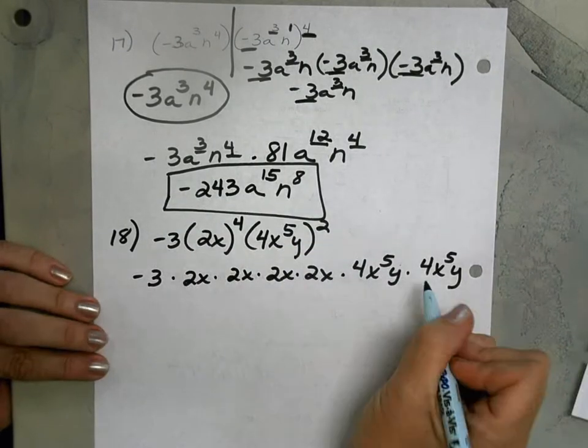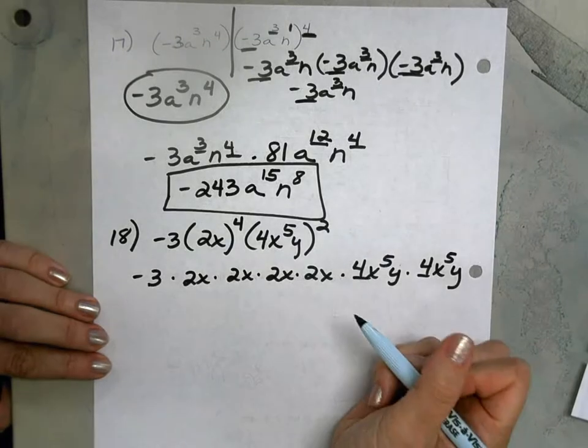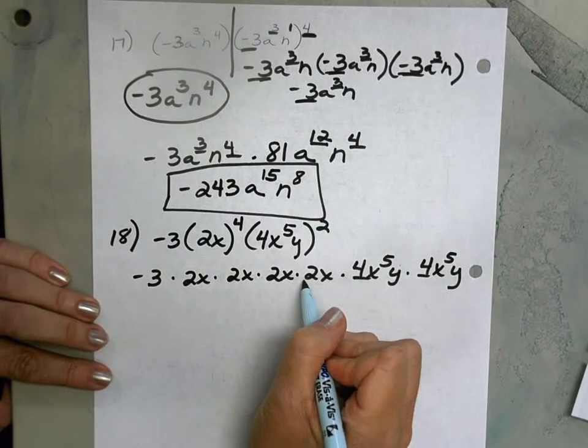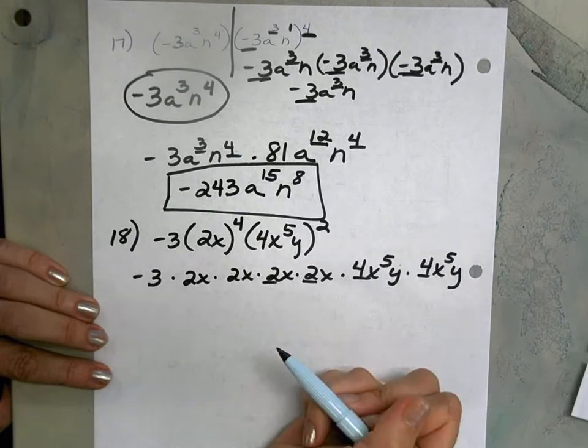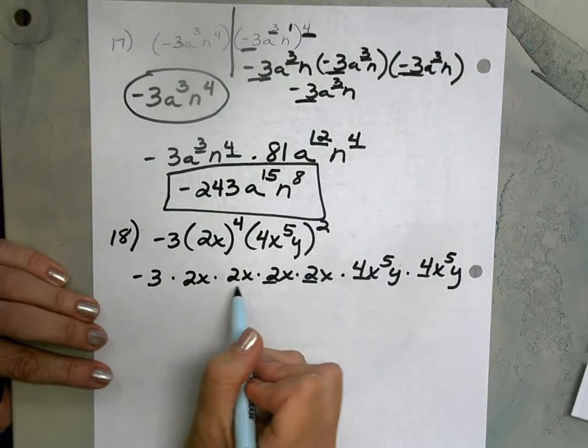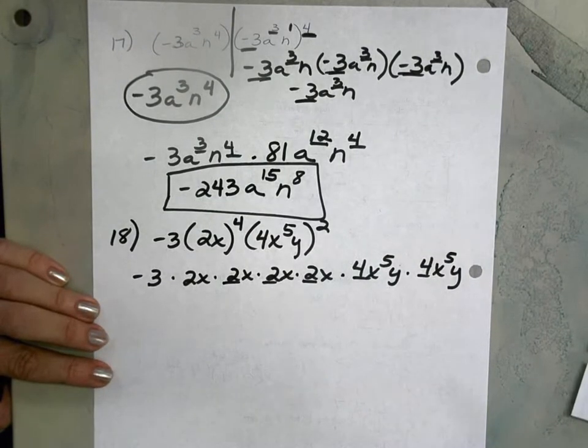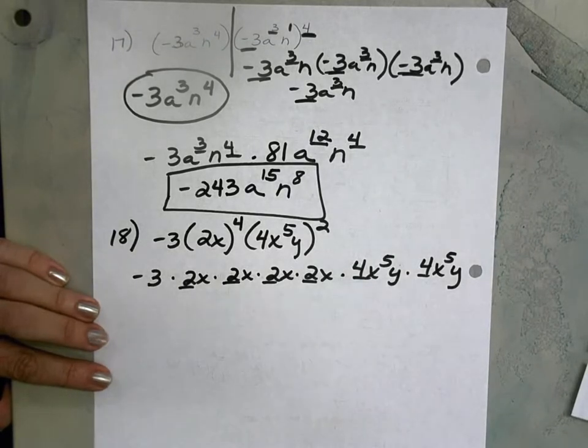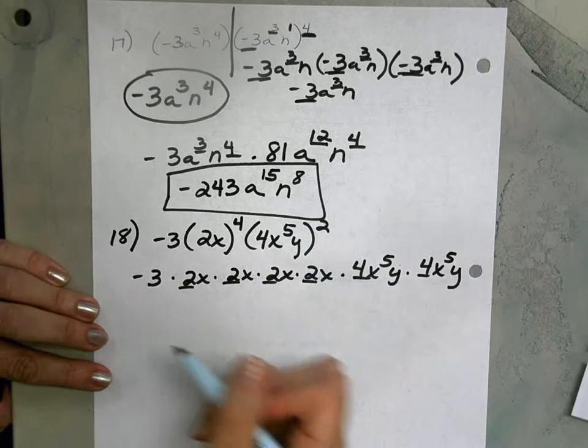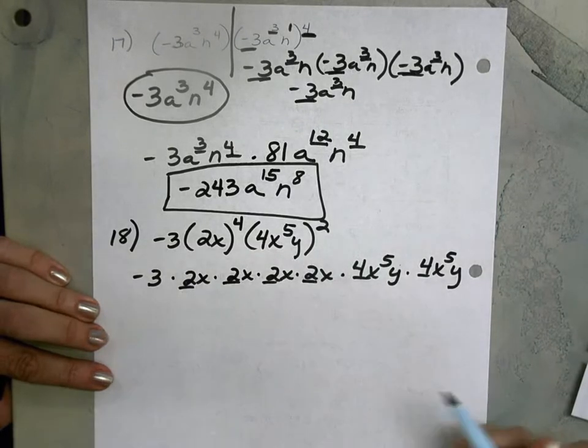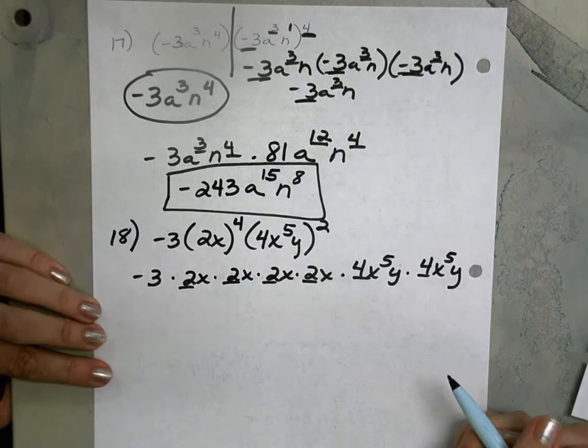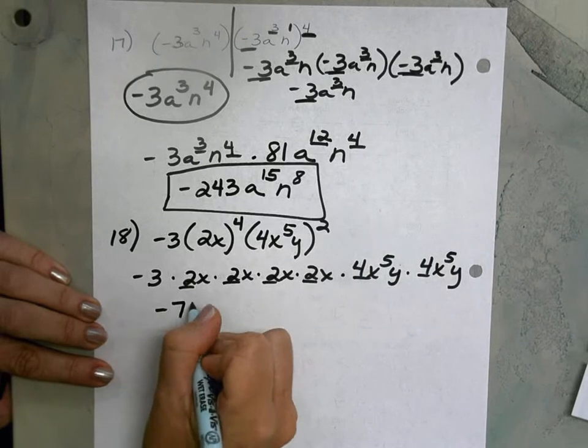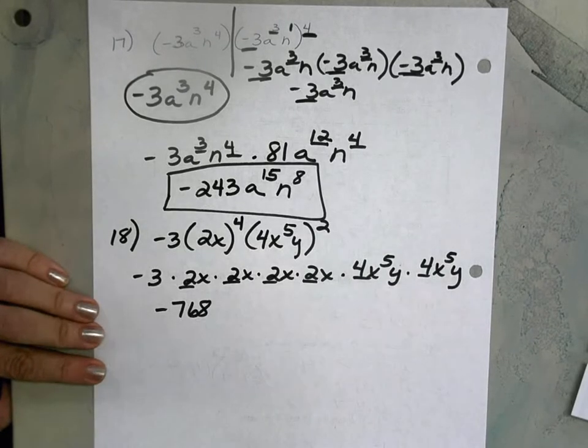All right, so let's start multiplying our coefficients. 4 times 4, 16. Times 2 is 32. Times 2 is 64. Times 2 is 128. Times 2 is 256. Times 3, and I did the math ahead of time. This one I did not know in my head. Is negative 768. And that's your coefficient.